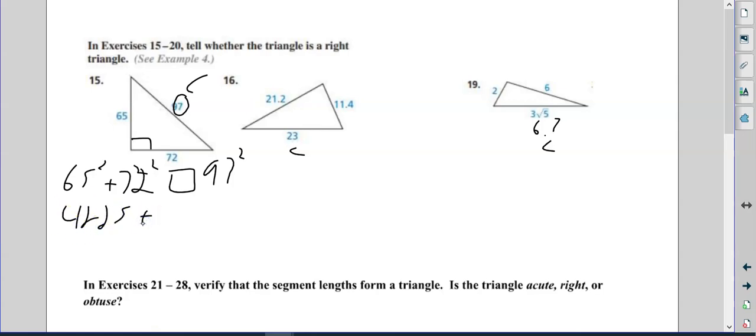Plus 72 squared is 51.84. And let's just have that equal sign, and then 97 squared is 94.09. So we're going to add the 42.25 plus the 51.84 and get 94.09. So 94.09 equals 94.09—that is a true statement, so yes, it is a right triangle.